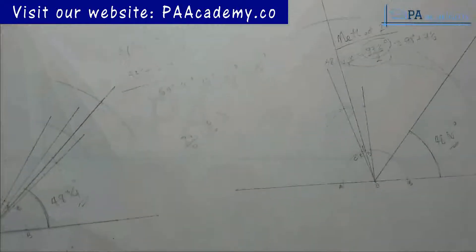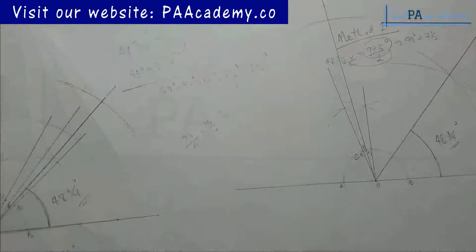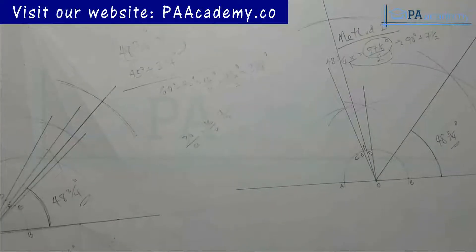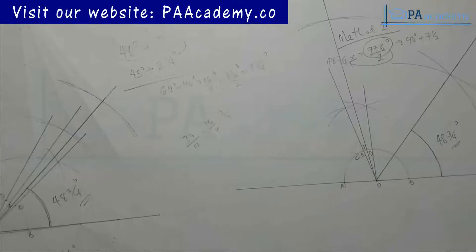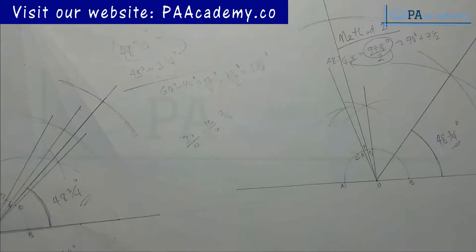Those are the two methods you can use to construct angle 48¾°. If you find value in this video please give it a thumbs up, and let me know in the comments which method you think is more easy and convenient. If you want to know how to construct other angles like 67.5°, 165°, 28.5°, 33¾°, and others, check the playlist on Technical Drawing. Thank you and see you in another video.